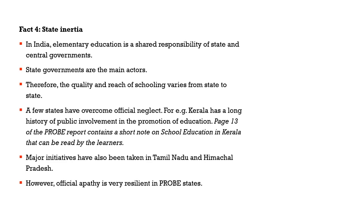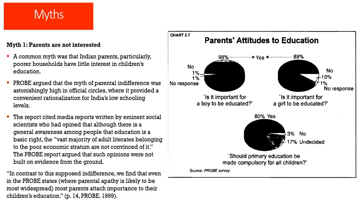The fourth fact was that of state inertia, highlighted by the PROBE report. In India, elementary education is a shared responsibility on the concurrent list, and state governments are the main actors. The quality and reach of schooling varies from state to state. The report highlighted official neglect in many states, though a few states had overcome this — particularly Kerala, with its long history of public involvement in education. Major initiatives were also taken in Tamil Nadu and Himachal Pradesh, but official apathy in the probe states remained very resilient.